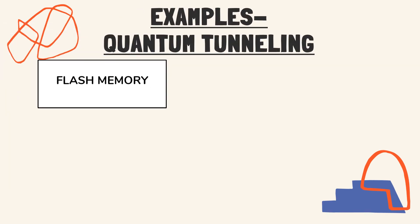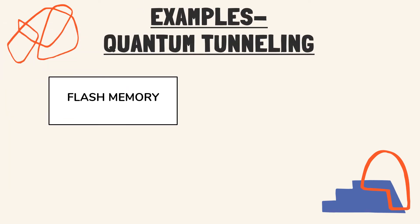So, for a more in-depth understanding of this phenomenon, I will look at three examples of quantum tunneling that are seen in our daily life. And these are, one is flash memory, the other is scanning tunneling microscope, and the third one is alpha decay.